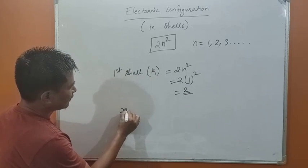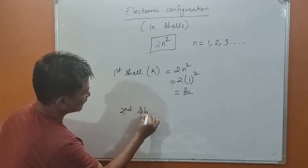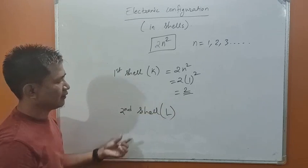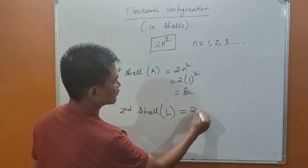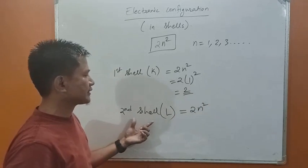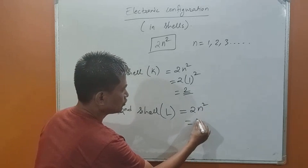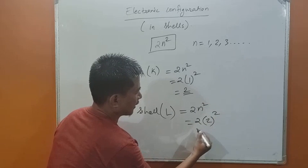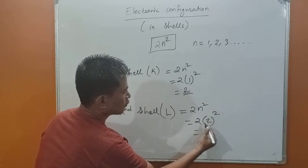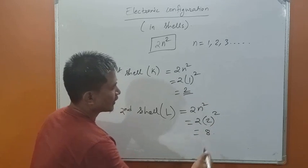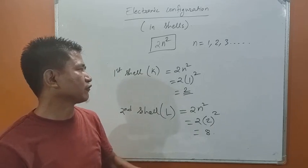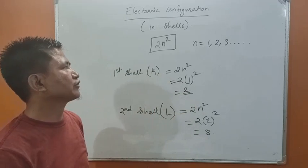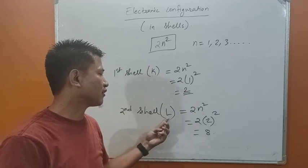Similarly, the second shell is denoted by the letter L. The maximum number of electrons that can go into the second shell is 2 into n squared, where n equals 2. So 2 squared is 4, and 4 into 2 is 8. The maximum number of electrons in the L shell is 8.